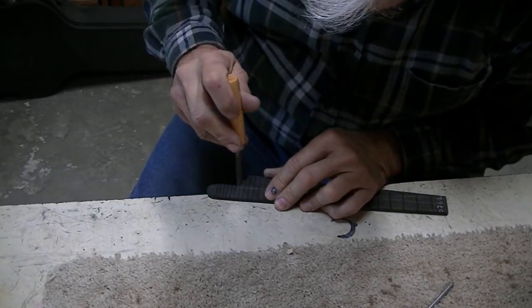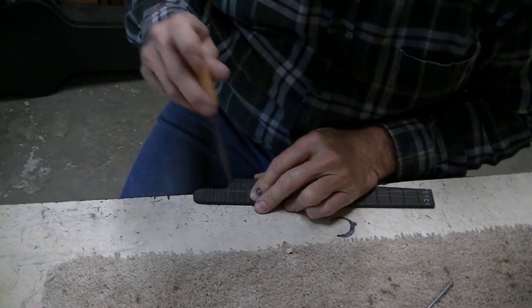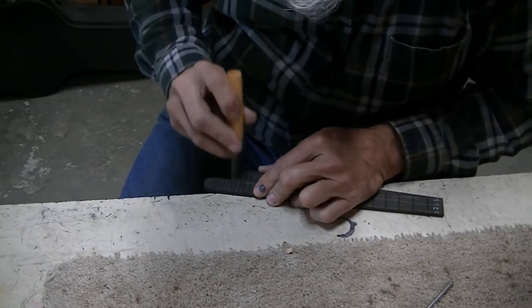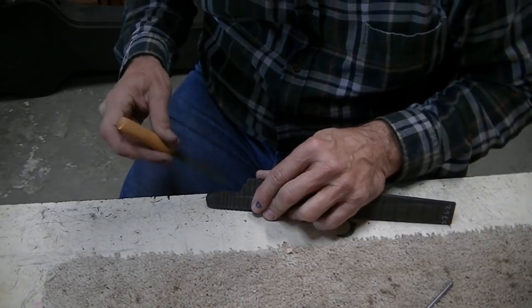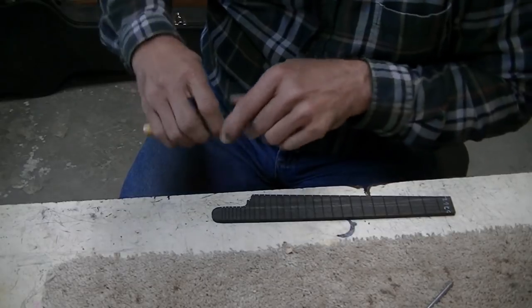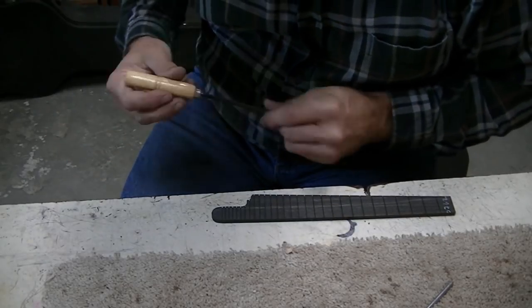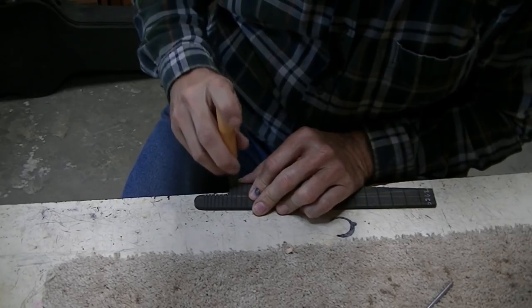All right, so we've got that traced out and we'll go cut that out on the bandsaw. Got it roughed out and I'm going to clean it up now with some files and just make it look better. You know, this is all going to be scalloped anyway, but I like to file it before I scallop it. There's more meat there, it just feels more substantial to file on.